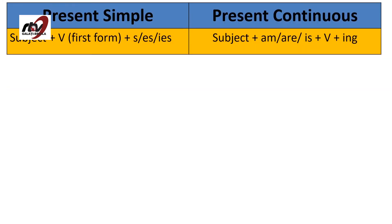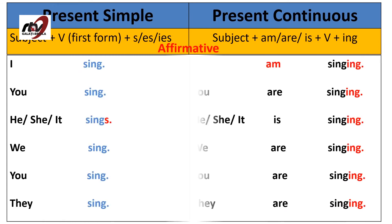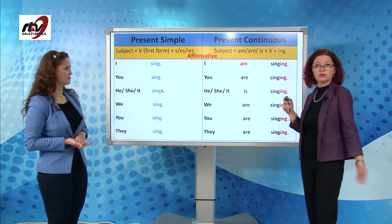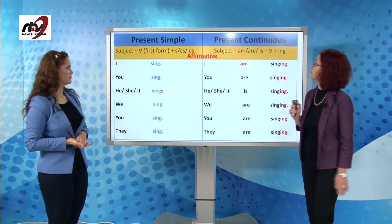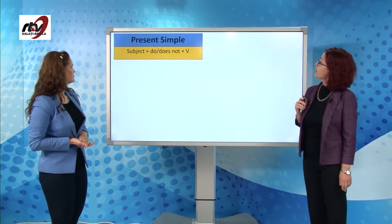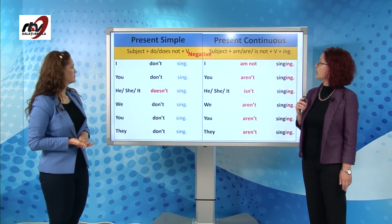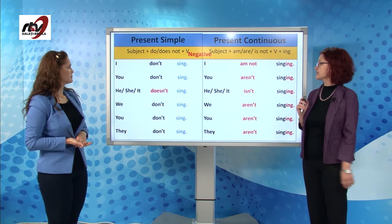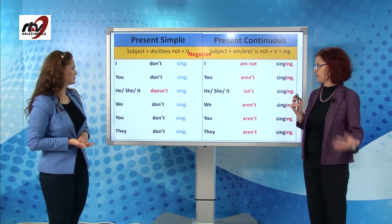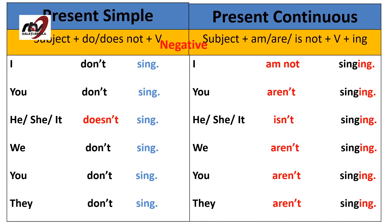Let's look at present simple and present continuous comparatively. In the affirmative: I sing / I'm singing. I sing in the shower — that's a habit I have. I'm singing now — la la la — for example. The negative: I don't sing, he/she doesn't sing, we don't sing because our voice sounds terrible. I'm not singing now, I'm just humming.